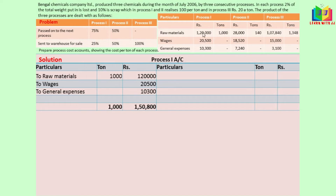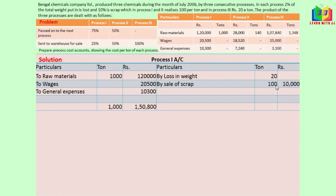For process 1 account, we write all the expenses on the debit side: raw materials, wages, and general expenses. The input was 1000 units. The loss in weight is 2%, so 1000 × 2% = 20 tons, but it has no value so nothing is entered for it. The scrap realizes 10%, so 1000 × 10% = 100 tons, and it realizes 100 rupees per ton, giving 100 × 100 = 10,000 rupees.